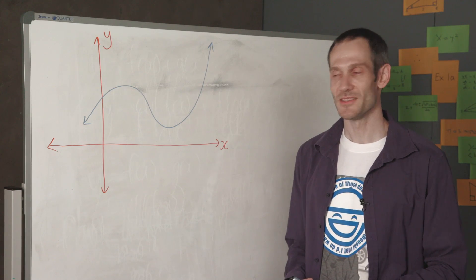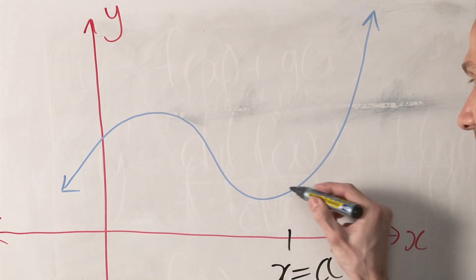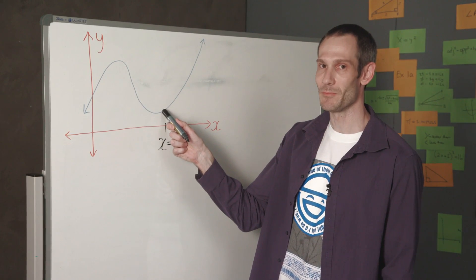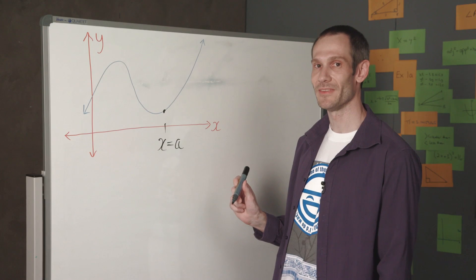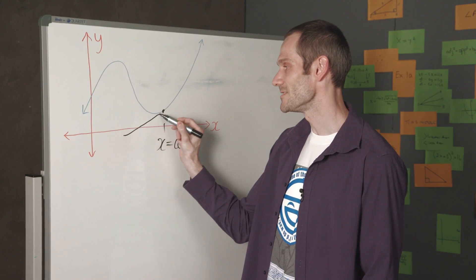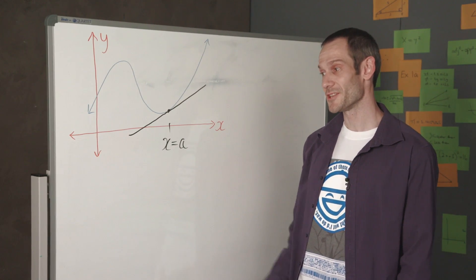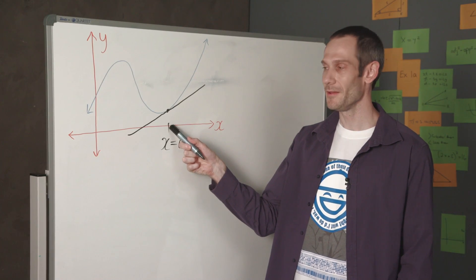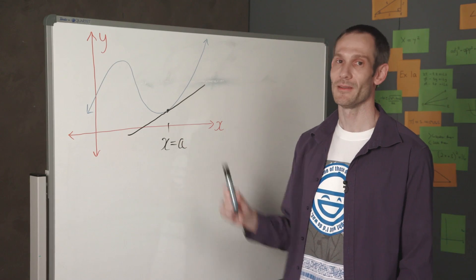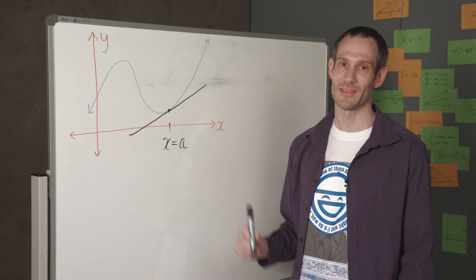So say I want to work out the tangent line at the point x equals a. It's a straight line — it must touch the curve of the function at that point, and thus it must also have the same slope as the curve at this point. So in this case, my tangent line to the curve of the function is given as follows. The derivative of a function at x equals a will tell me the instantaneous rate of change of the function at this point, and also the slope of the tangent line to the curve of the function at this point.